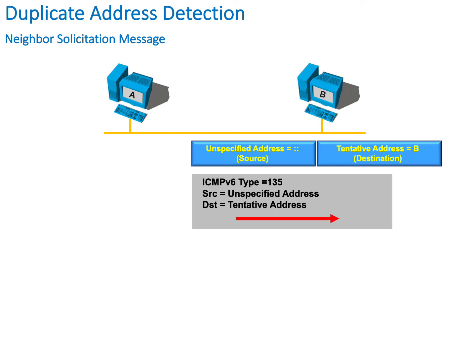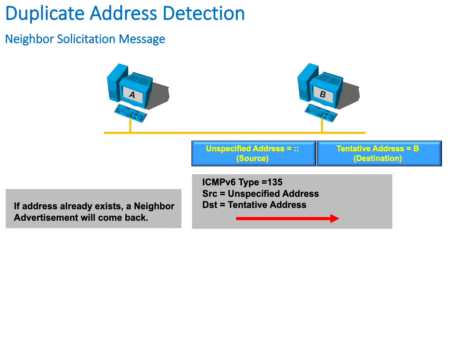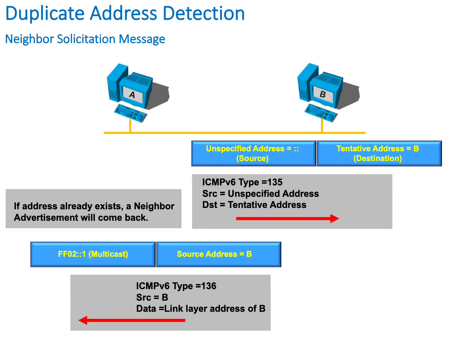In this example, host B is already using the address that host A would like to use. Therefore it responds with a neighbor advertisement in the form of a multicast. Due to the fact that host A used an unspecified or null address as its source, host B cannot respond directly to A, hence the multicast FF02. We now have an indication that this particular address is in use and will therefore have to modify our source address.